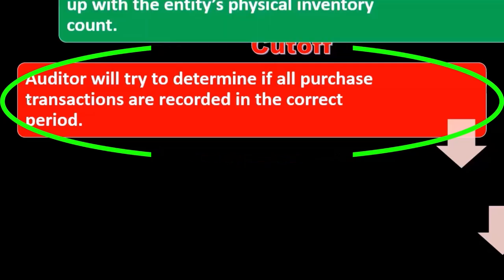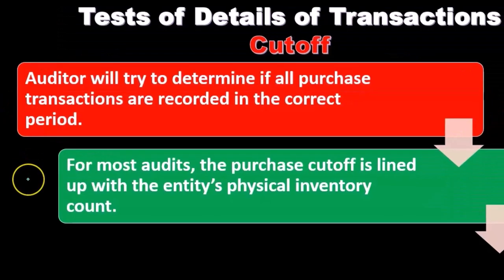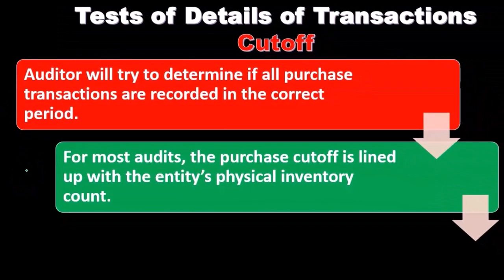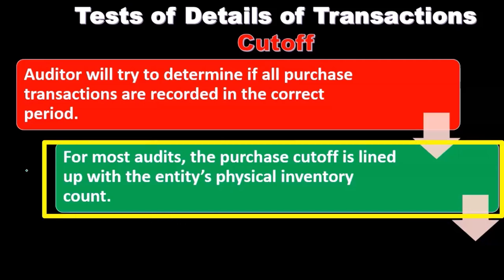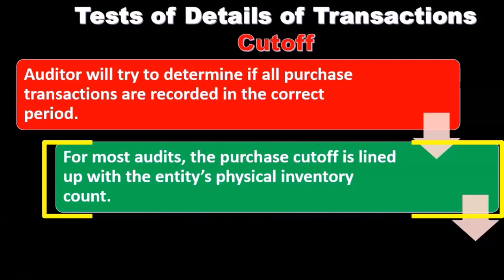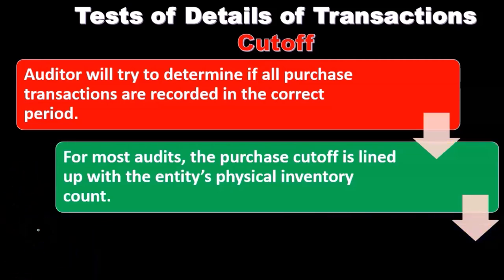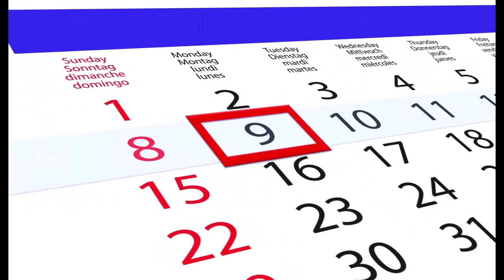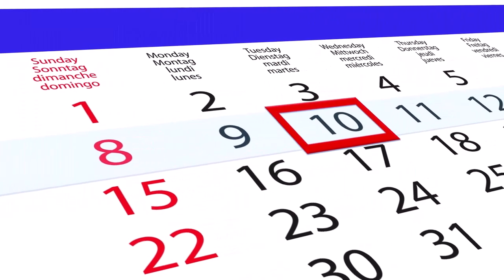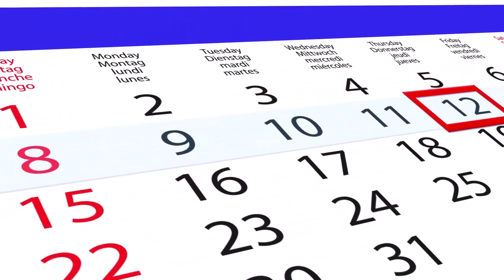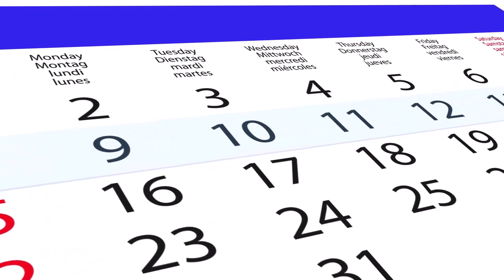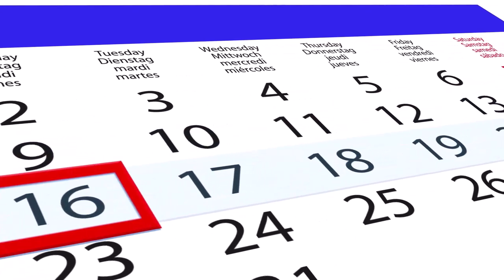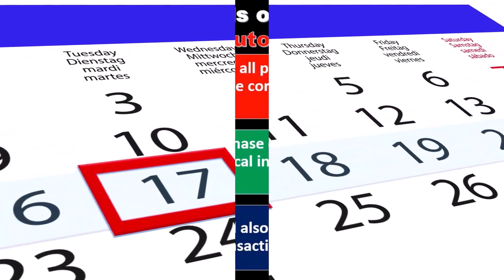Transactions are recorded in the correct period. For most audits, the purchase cutoff lines up with the entity's physical inventory count. We're going to line this up with the physical inventory count, which will typically happen close to year end, so that we can check that the physical inventory was on the books and is indeed present at that point in time.